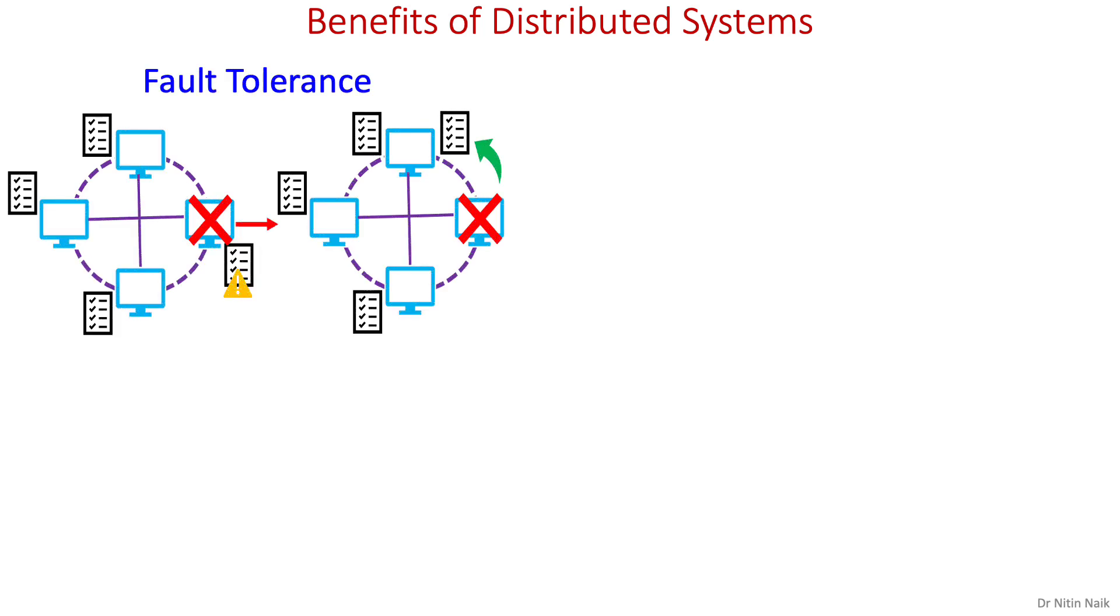Distributed systems offer several benefits over traditional and centralized computing systems. First is fault tolerance. A distributed system consists of a large number of nodes working together, so failures of some nodes can be tolerated by other nodes, therefore preventing a single point of failure.